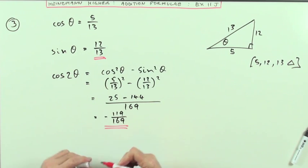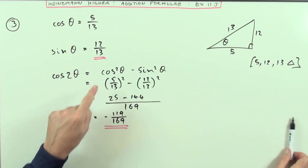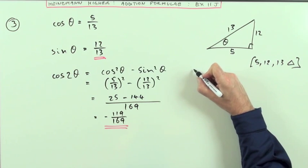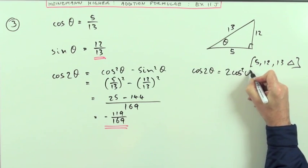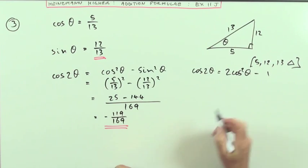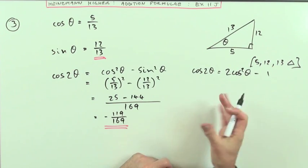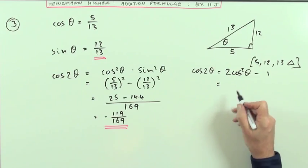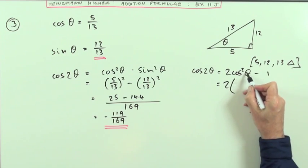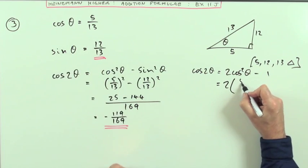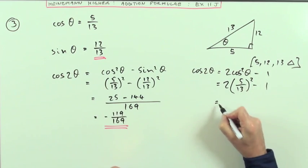Now, it's just really a case, was it easier to do that or was it easier to use this formula? Cos 2 theta is 2 cos squared theta minus 1. You've also got 1 minus 2 sine squared theta, but they seem about equal to each other. Well, how do these compare to each other? That'd be 2 times the cos squared theta. The cos of theta was 5 thirteenths squared minus 1.